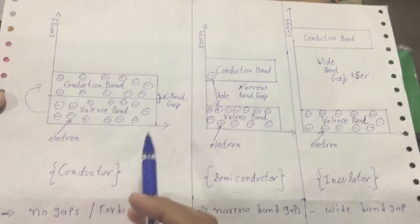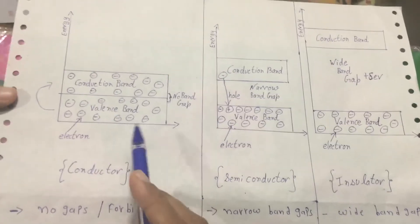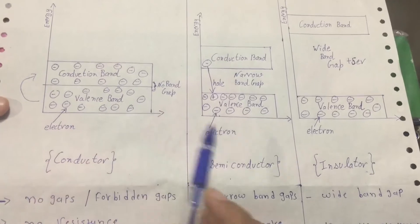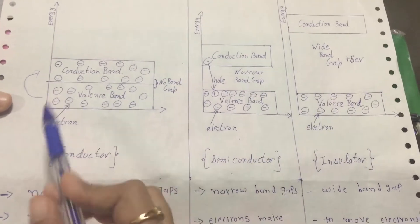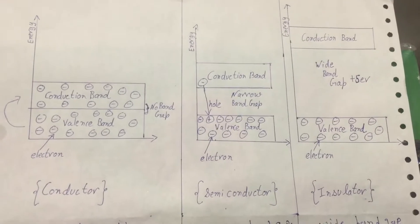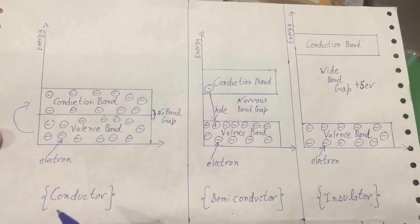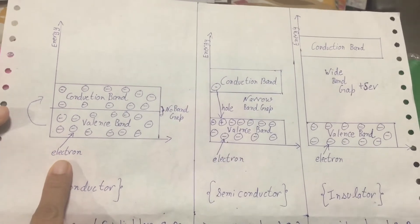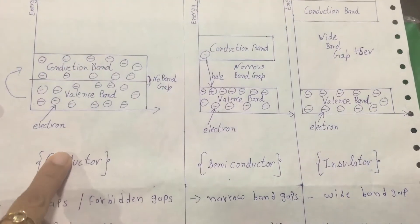Today we are going to learn about the energy level diagram of conductor, semiconductor, and insulator. These three types of material are applicable in all electronics devices. First, we are going to understand about conductors.